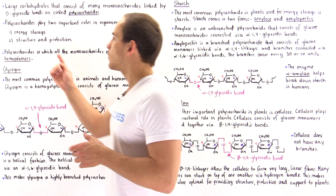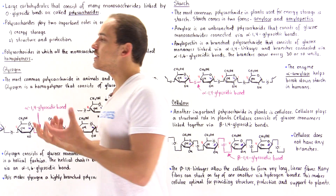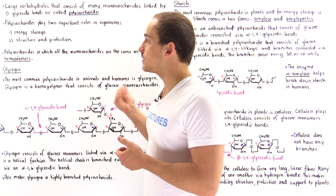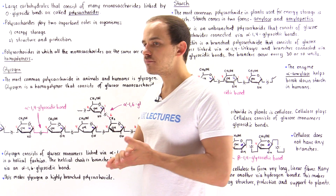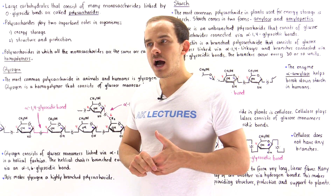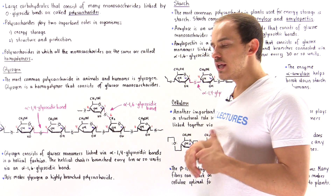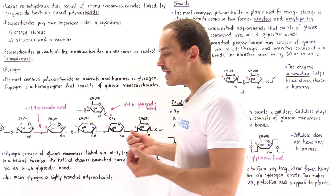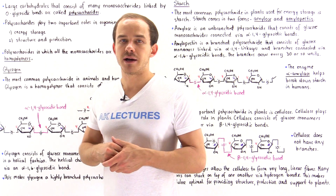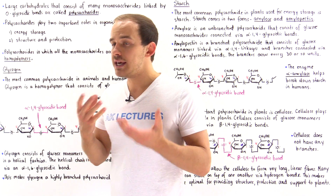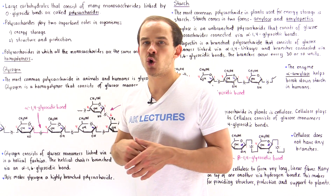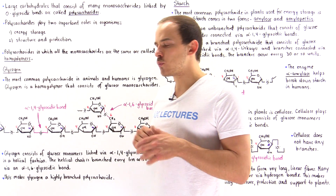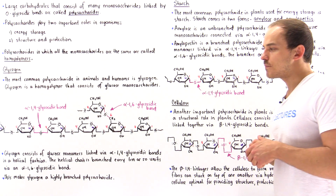Certain organisms such as plants also use polysaccharides to basically form structure and give the cell structure and protection. Now, those polysaccharides that consist entirely of the same identical type of monosaccharide are known as homopolymers. And this is what we're going to focus on in this lecture.